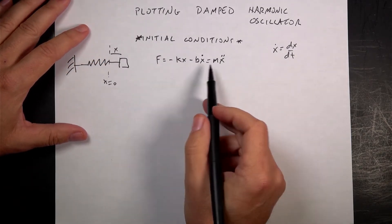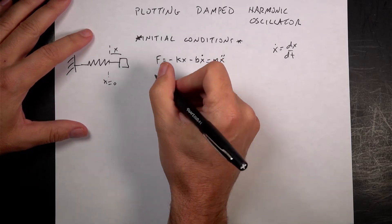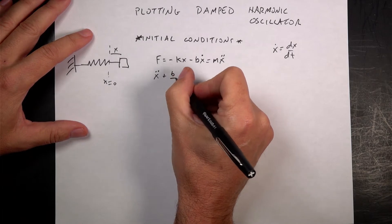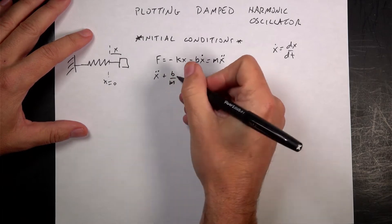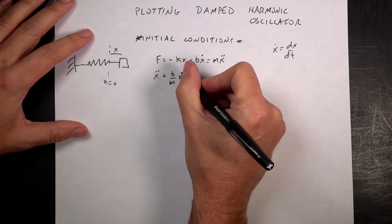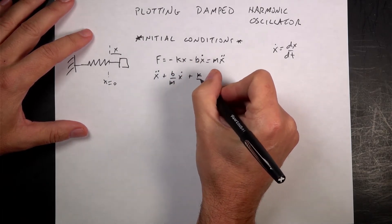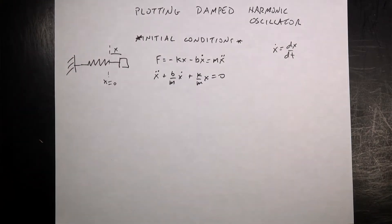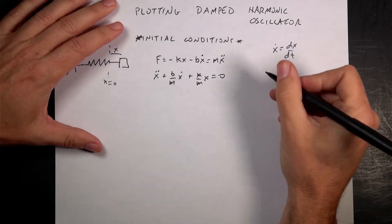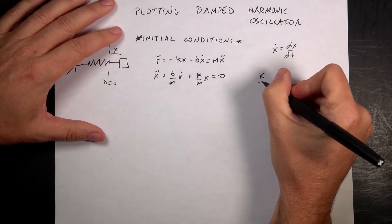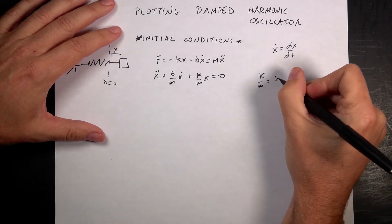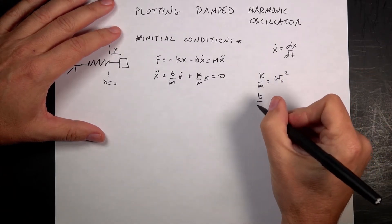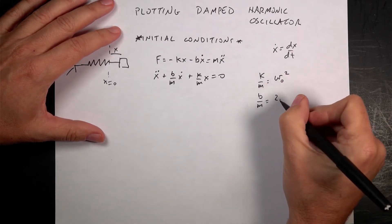This equals mass times x-double-dot, which is the acceleration, the second derivative with respect to time. Dividing both sides by m and rearranging, I get x-double-dot plus (b/m)ẋ plus (k/m)x equals zero. Now let k/m equal ω₀² and let b/m equal 2β.